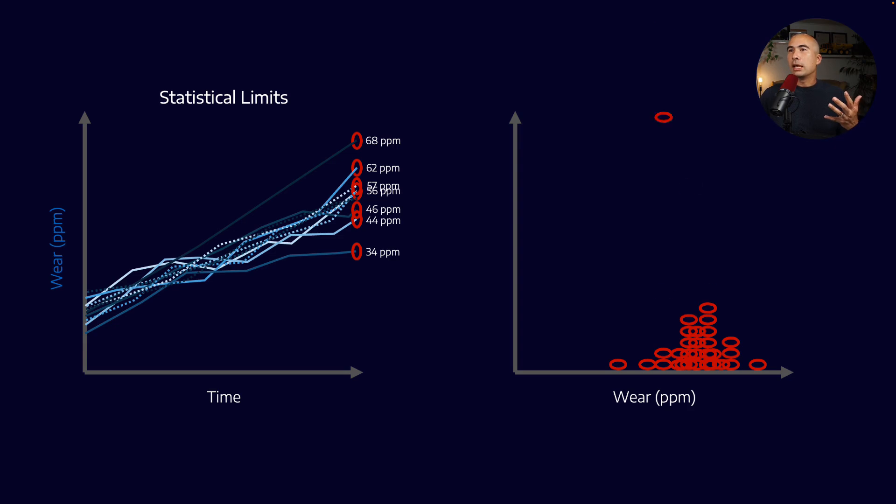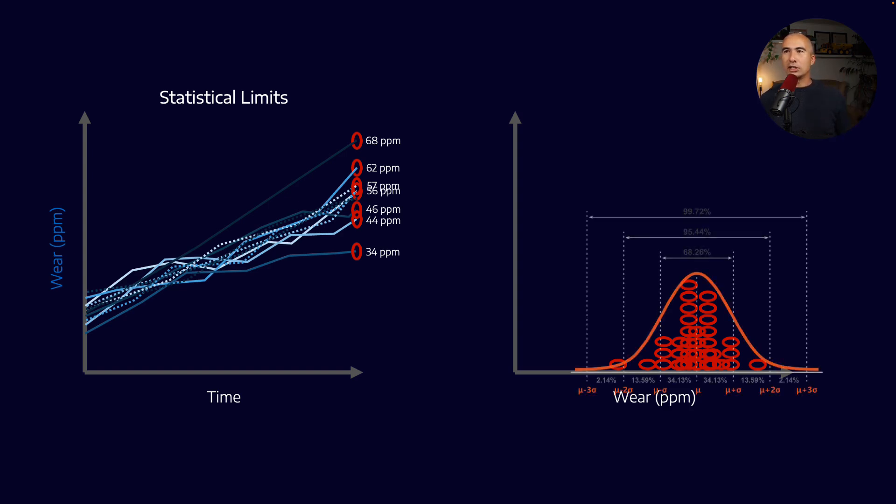And if you continue to do this over time, what you're going to develop is a kind of spread of results. And typically, the more results you get, per the central limit theorem, you'll start to see it approach a normal distribution. And we typically say that in order to apply the normal distribution to a set of data, you probably need about 30 data points. So eventually, it will start to look like the normal distribution. And now we can start to set limits.